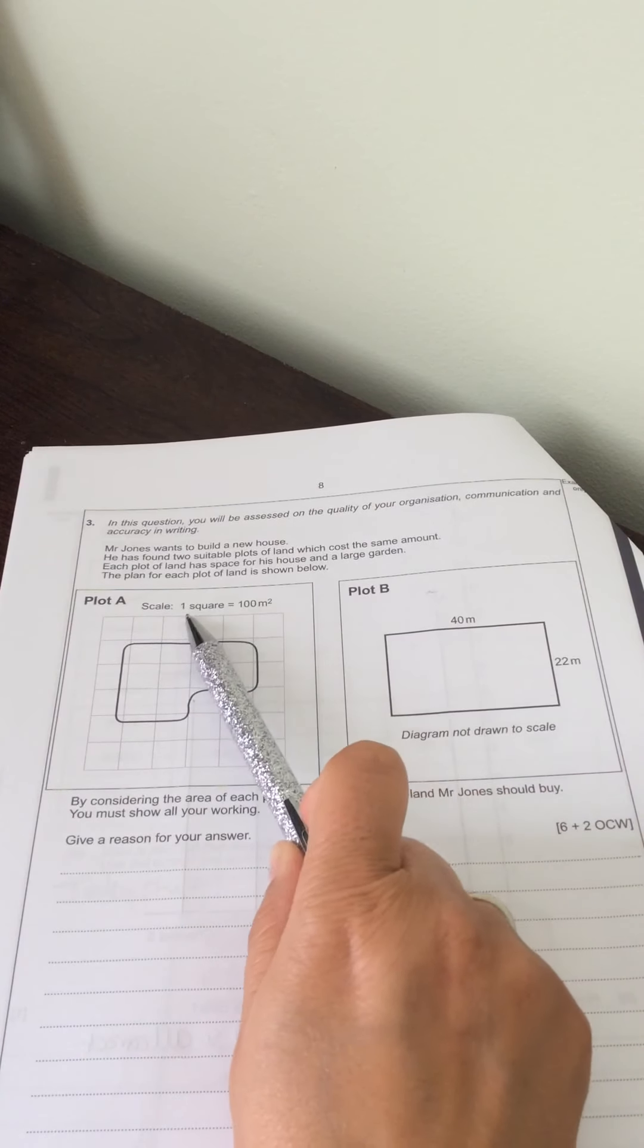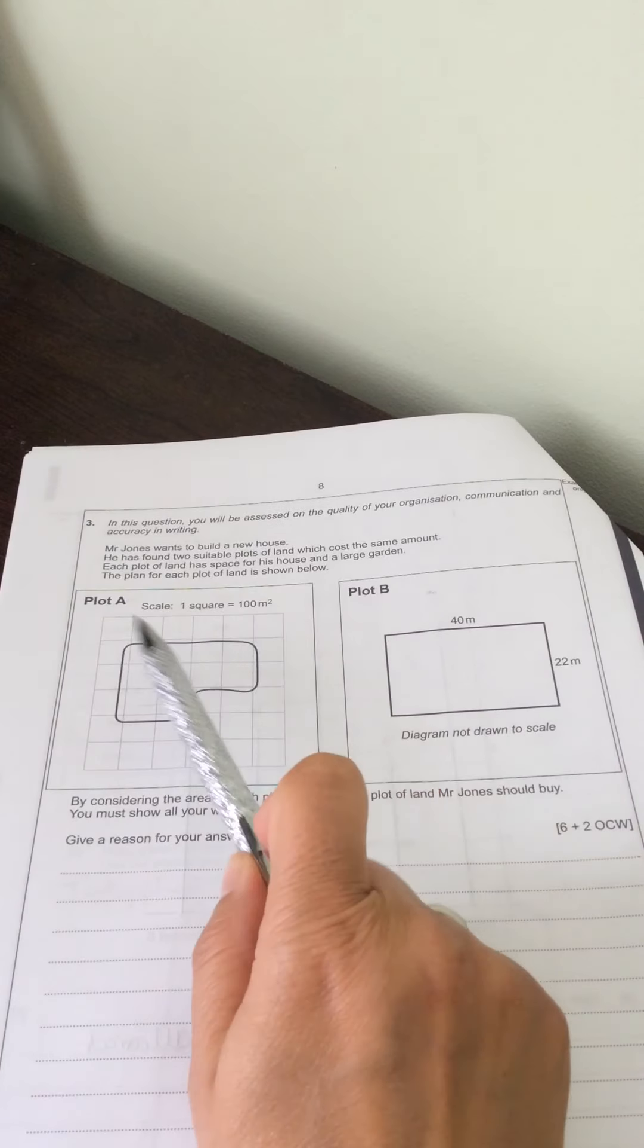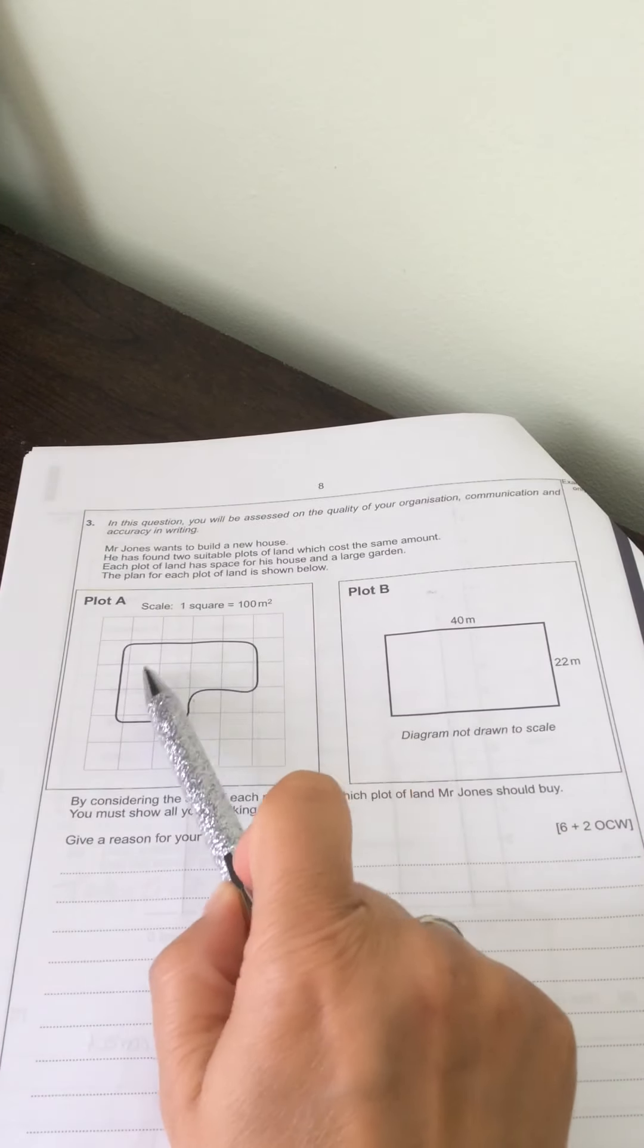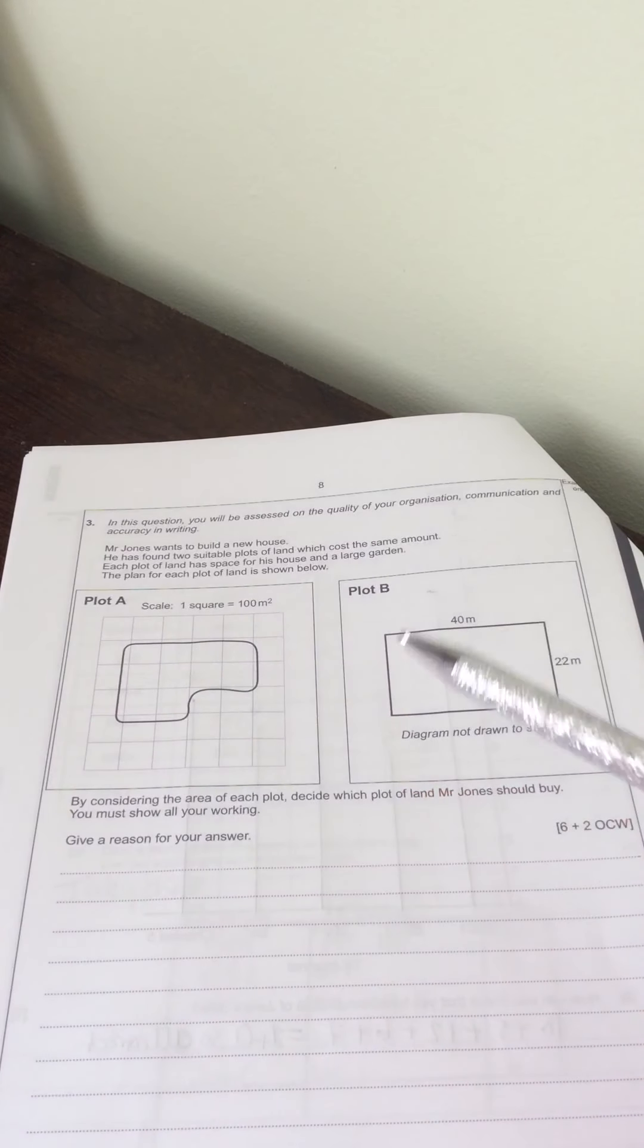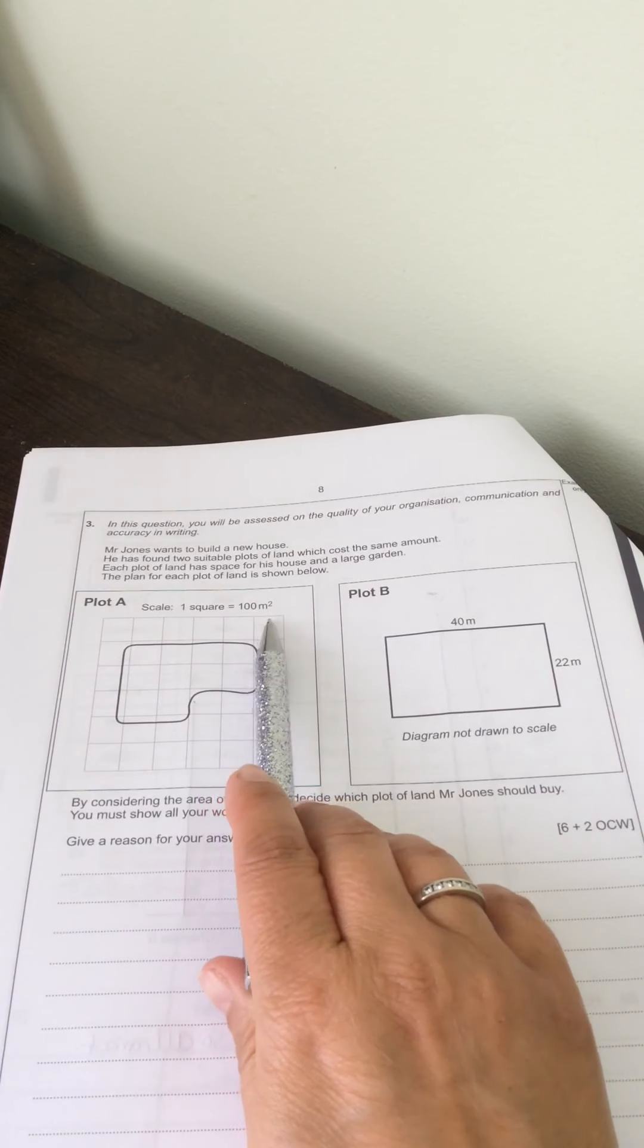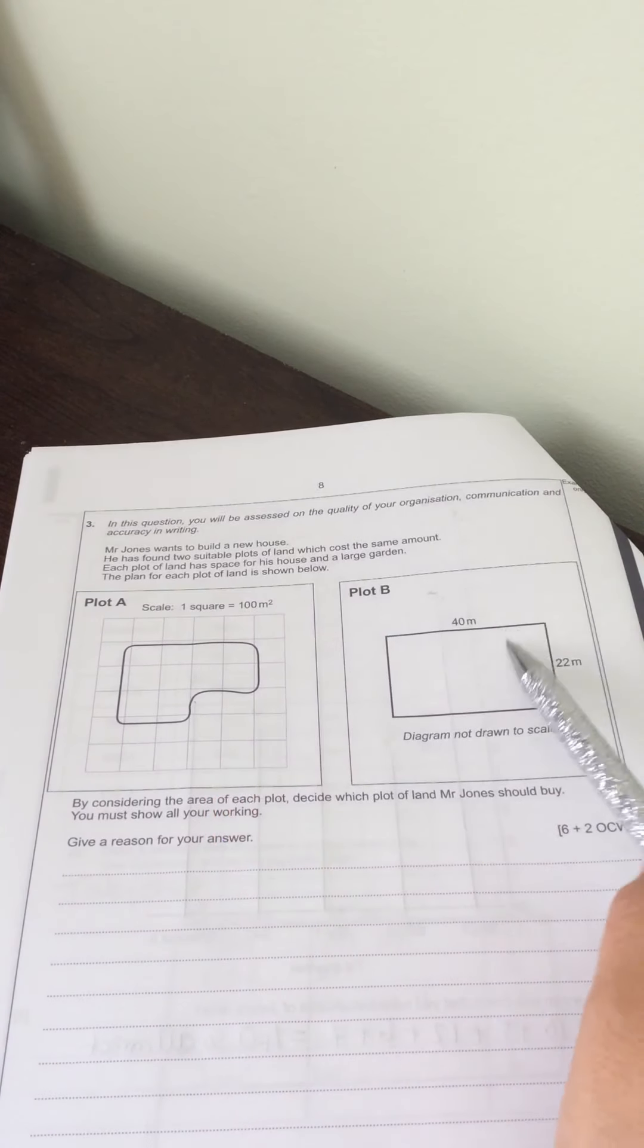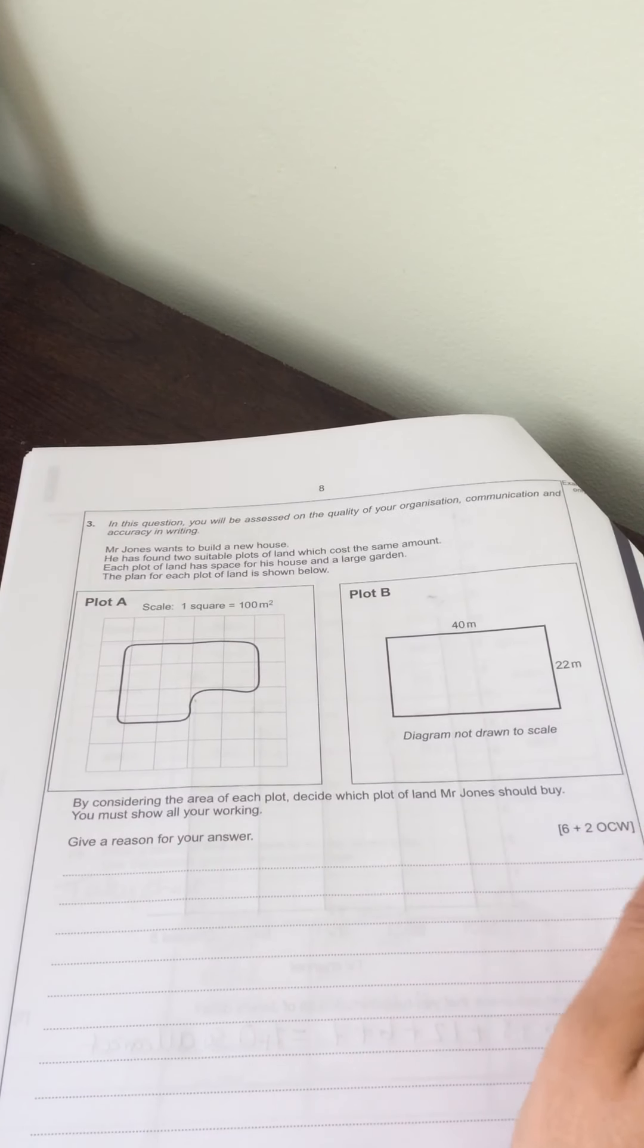So you can see here that we're told that each square is 100 metres squared and there are 1, 2, 3, 4, 5, 6, 7, 8, 9, 10 inside roughly. Plot B, we're not told the scale but we are given the dimensions so it's a 40 metre by 22 metre.